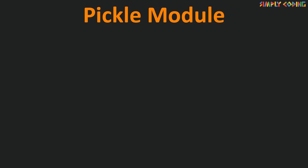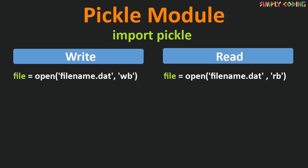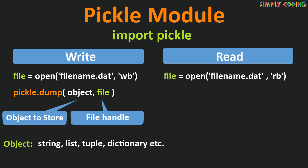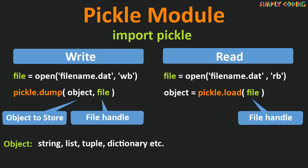So how do we use the pickle module? We start our program by first importing pickle. We open the file in binary mode to either read or write. To store object data in a file, we use pickle.dump, which takes three arguments: the object we want to store — it can be a string, list, tuple, dictionary, or any object — and the file object opened in write binary mode. There is a third argument which defines the protocol, which we will not cover now. To read data back, we use pickle.load, which takes the file handle opened in read binary mode and returns the object stored in the file.